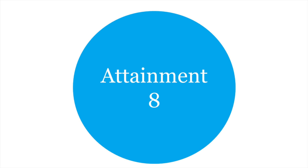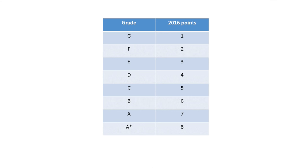Attainment 8 will show the average grades of all the pupils in the school in their best eight subjects. This will be expressed as a number which will represent a grade. For example, in a school with an Attainment 8 score of 6, the average grade for pupils in their best eight subjects is a B.